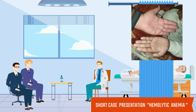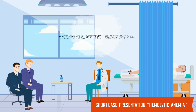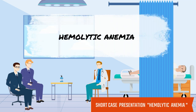Patient is pale and has yellow discoloration of the sclera. There is no clubbing, leuconychia, palmar erythema, Dupuytren's contracture, or flapping tremors. There is no petechia or bruise at any site of the body. Patient is afebrile. My diagnosis is hemolytic anemia.